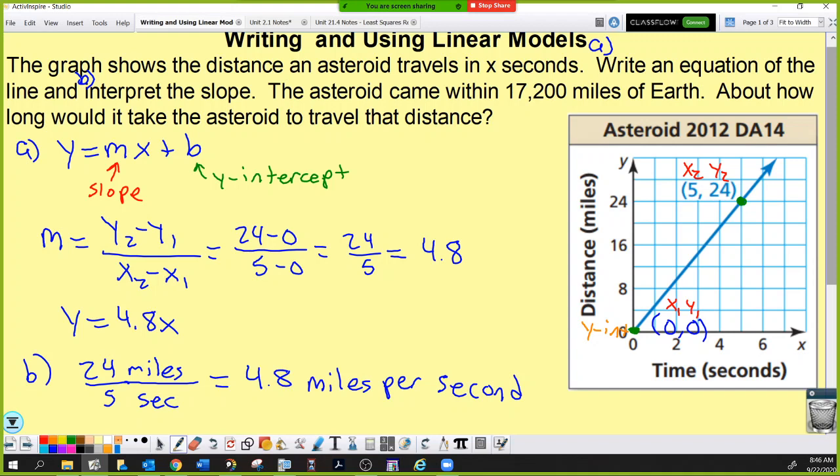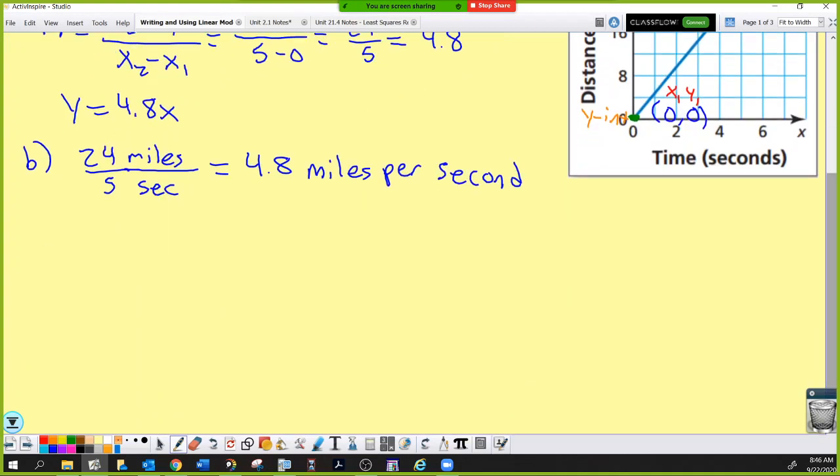Question C: The asteroid came within 17,200 miles of Earth. About how long would it take the asteroid to travel that distance? We have an equation. For part C, you have this equation: distance, or y, equals 4.8x. Part C says 17,200 miles. The question is, did they give me a distance, or did they give me a time? This is a distance.